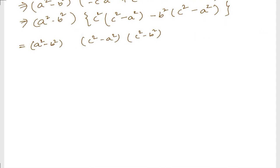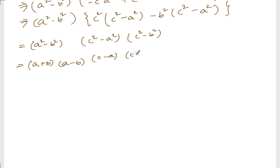And this is how we write the answer. Breaking down: a squared minus b squared gives a plus b times a minus b; c squared minus a squared gives c minus a times c plus a; and c squared minus b squared gives c minus b times c plus b.